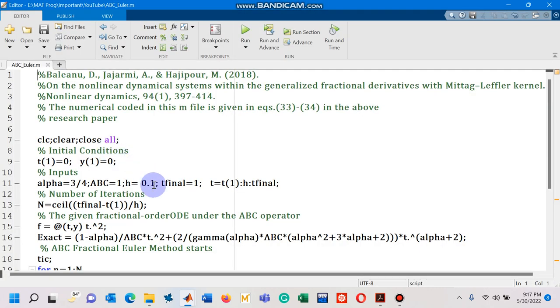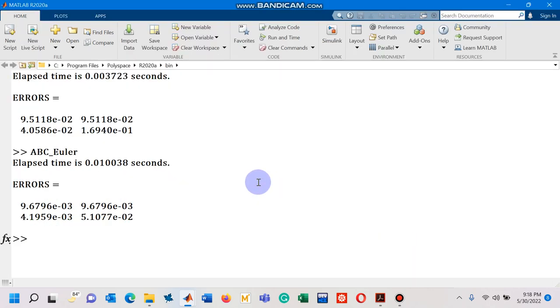Now, I am going to reduce the step size to 0.01 and now I comment line number 7 so that I can see the results along with the results that I have just seen on the command window. Run the m file and go to command window. You can see that this is the difference between the errors.